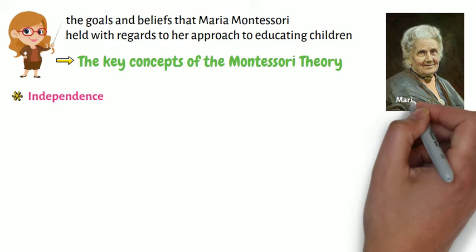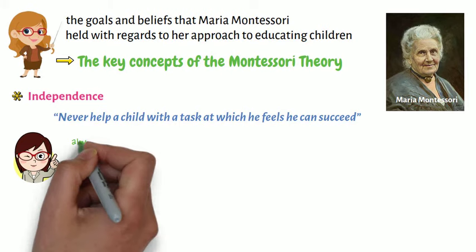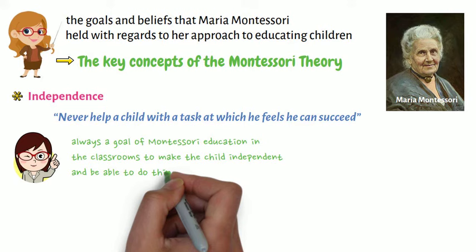On independence. Maria Montessori said: never help a child with a task at which he feels he can succeed. It must be remembered that it is always a goal of Montessori education in the classrooms to make the child independent and be able to do things for himself.